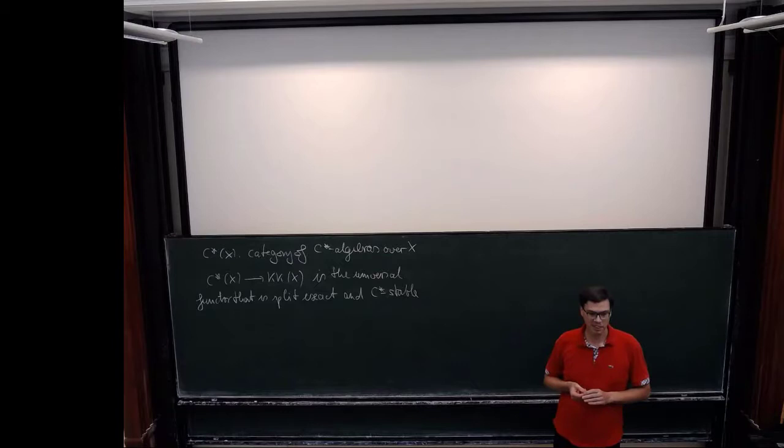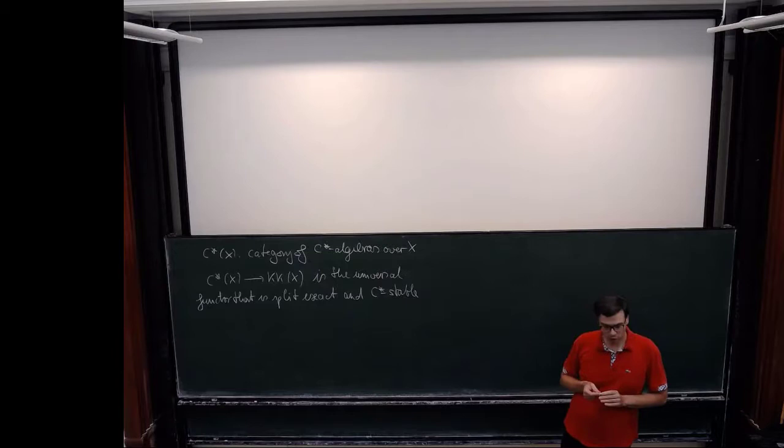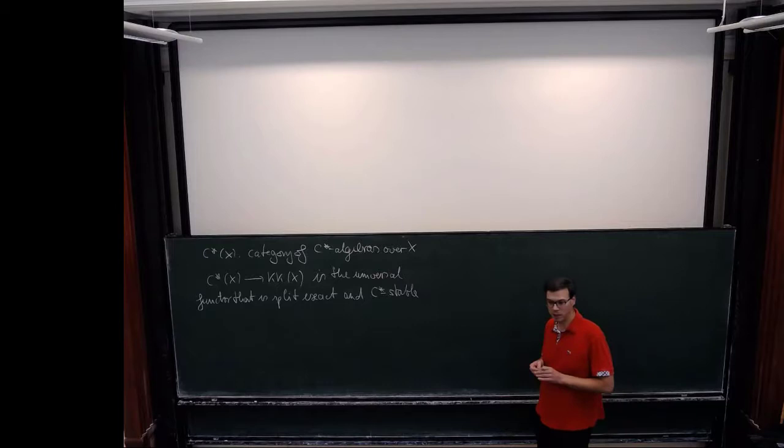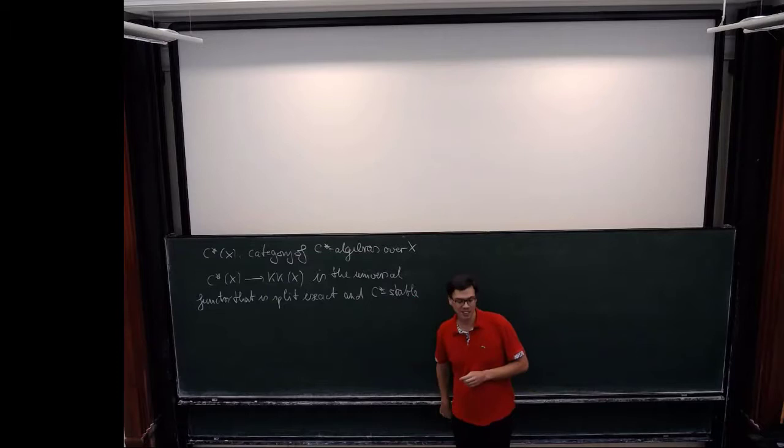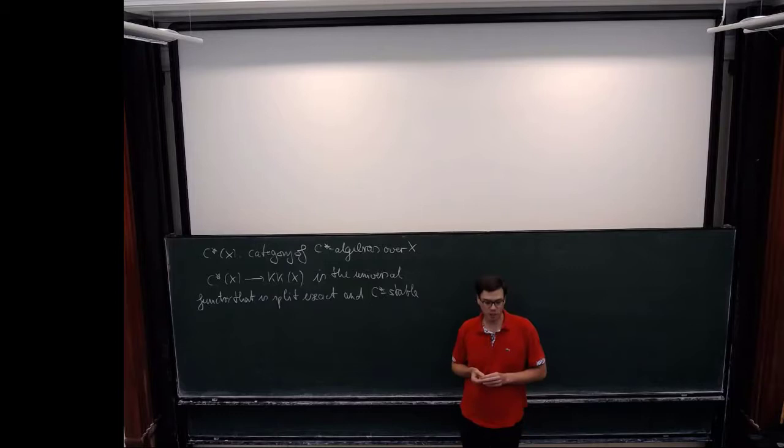I didn't write down homotopy invariance because that follows from these two properties. A nice proof of this result, which is not well known, is in a proceedings volume by Joachim Cuntz, Jonathan Rosenberg, and me. It's quite elementary and it's a good exercise in quasi-homomorphisms and split-exactness to show that these two properties imply that the functor has to be homotopy invariant.